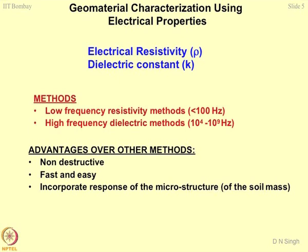For measuring these parameters, there are two methods. One is known as the low frequency method and another is the high frequency method. This refers to the frequency of AC — alternating current. Based on the type of current used, if it is DC or low frequency AC, the methodologies are based on low frequency resistivity methods. However, if the frequency goes beyond 10⁴ to 10⁹ hertz — from roughly 10 kilohertz to 1 gigahertz — this is known as high frequency dielectric methods.